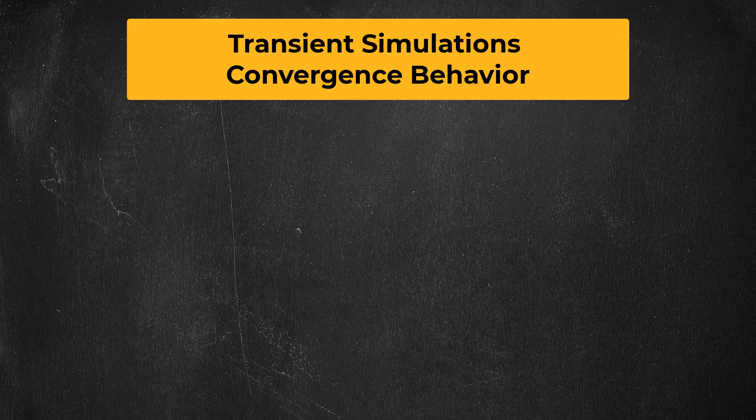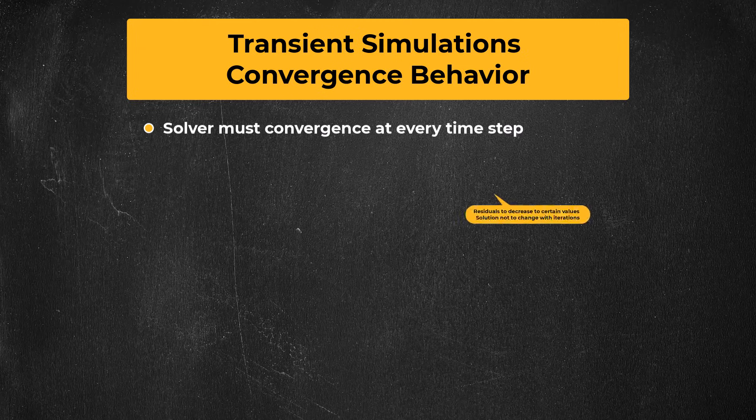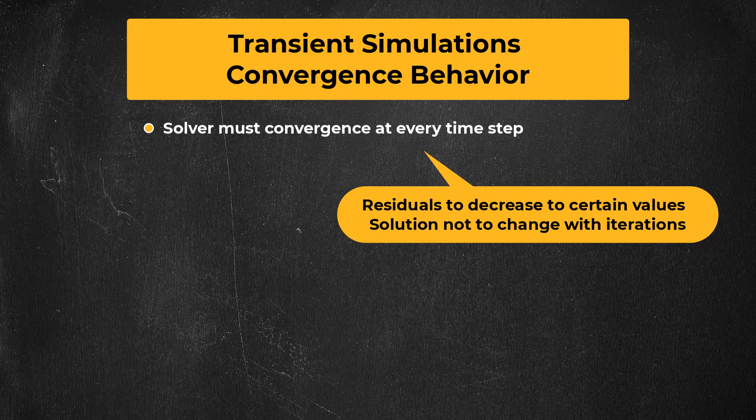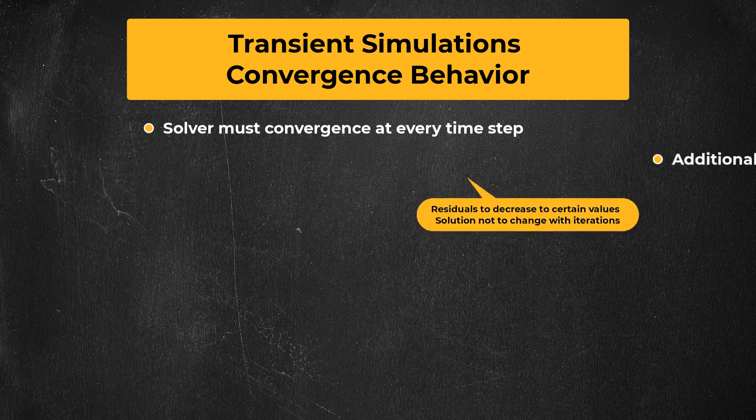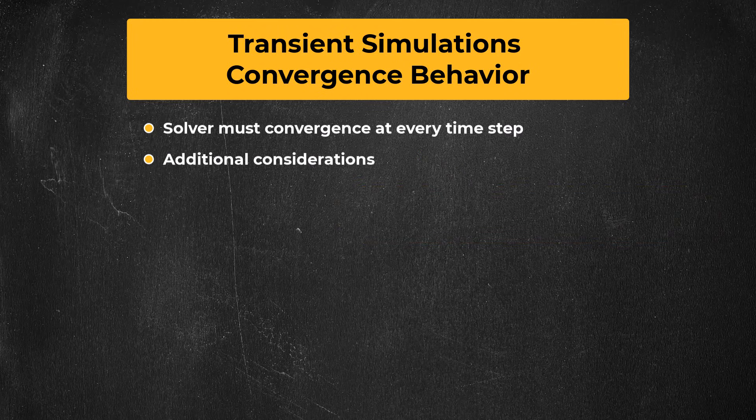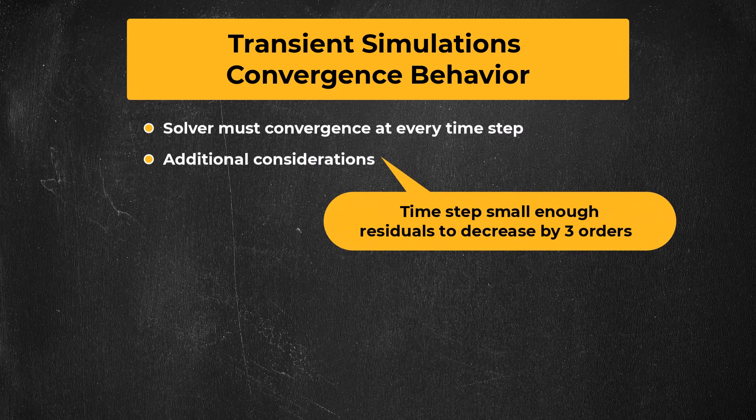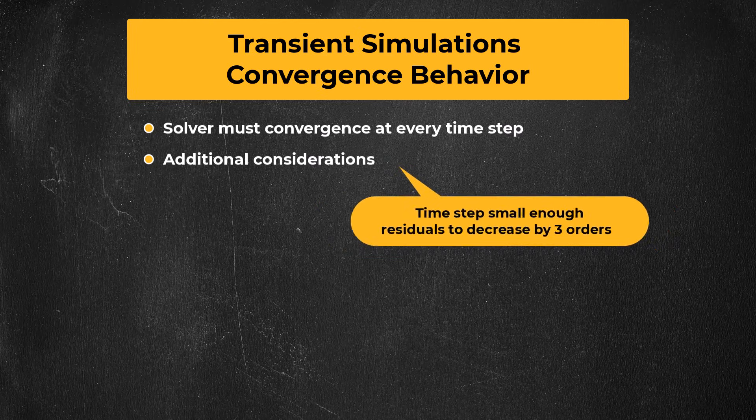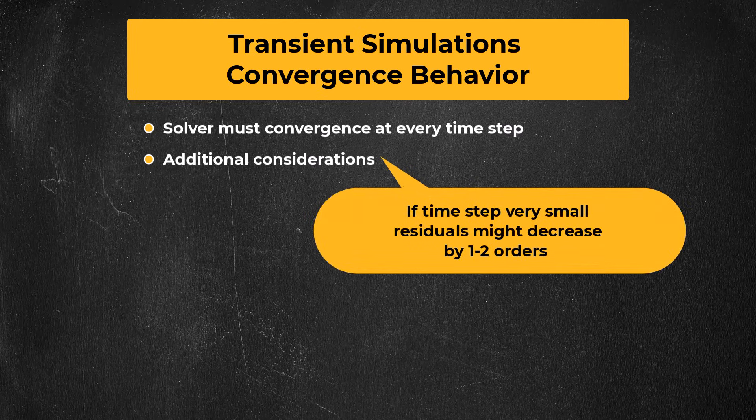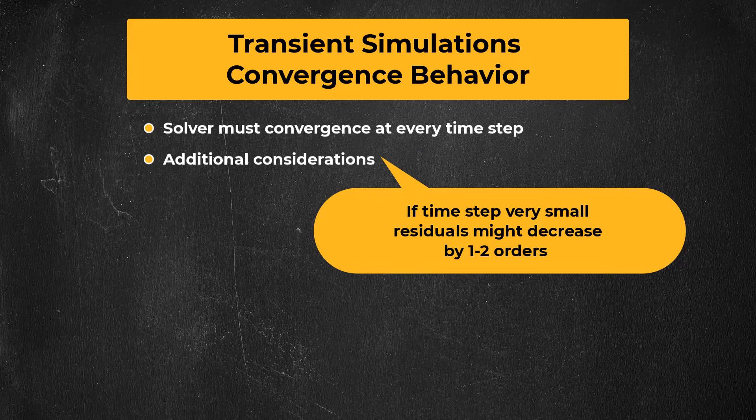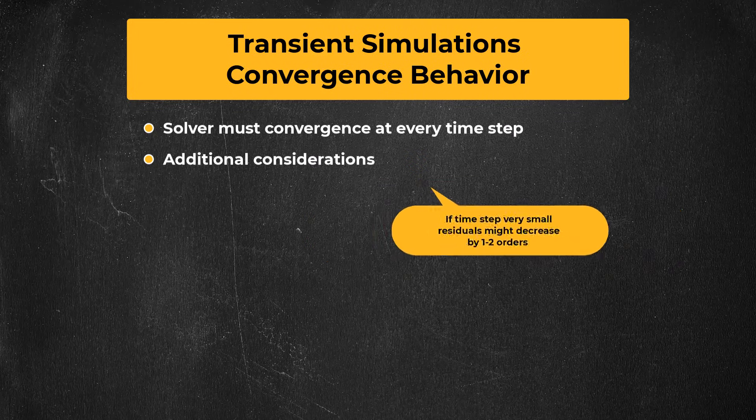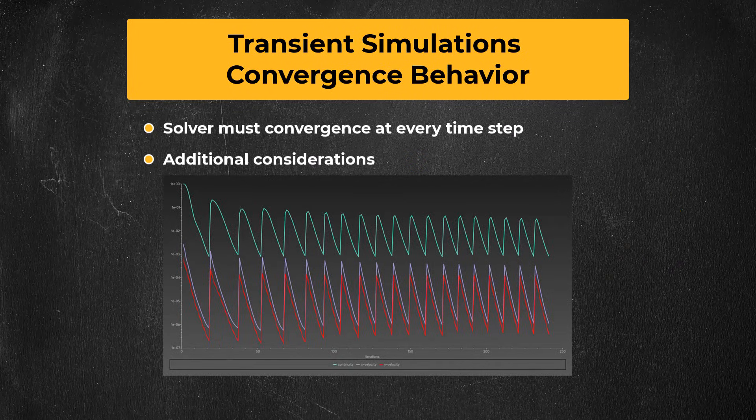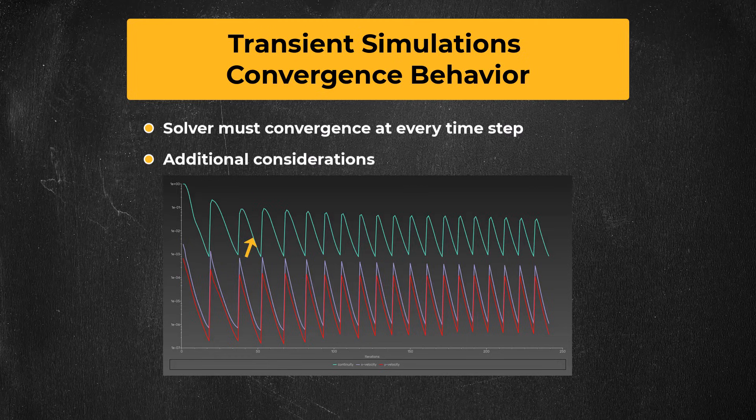Now let's talk about convergence. When you do a transient simulation, it has to converge every time step. Most of the time it's good enough for the residuals to decrease to certain values each time step, and the solution not to change with more iterations, but there can be additional considerations. Ideally, the time step size should be small enough for the residuals to decrease by around three orders of magnitude each time step, but sometimes if the time step size is very small, the residuals might only decrease by one or two orders, and that's okay. What you want to see is a sawtooth pattern where the residuals spike at the beginning of the time step, and then smoothly decrease.